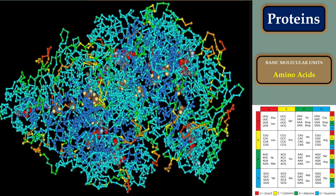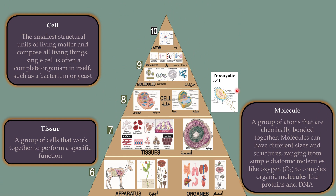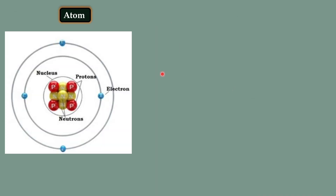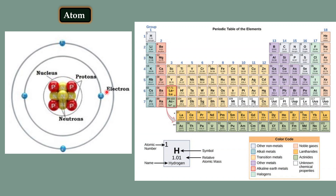Molecules can be made up of bounded atoms. Atoms are the basic building blocks of matter. Atoms consist of a nucleus containing protons and neutrons, and electrons that orbit the nucleus. Different elements have different numbers of protons in their nuclei, which determines their atomic number. Atoms can combine to form molecules through chemical bonds.